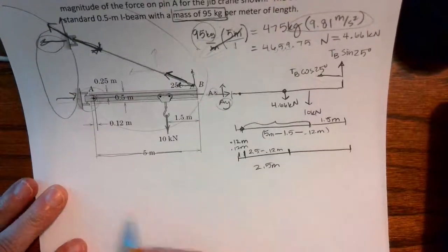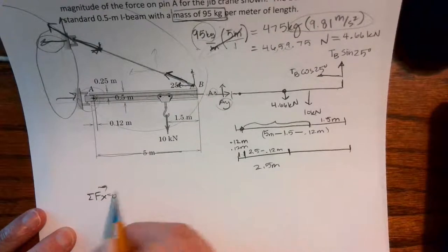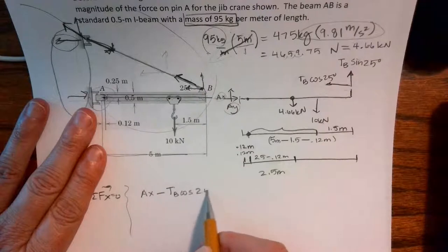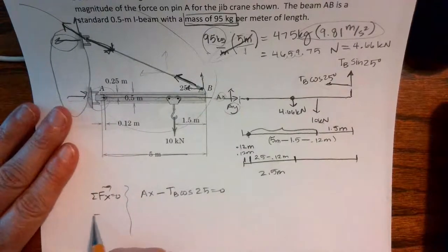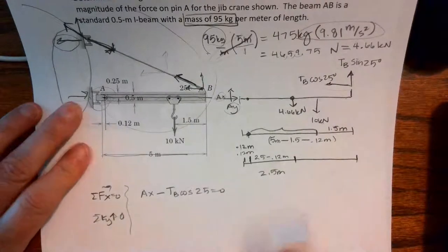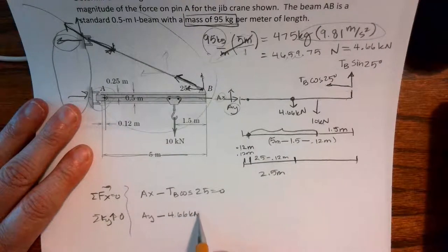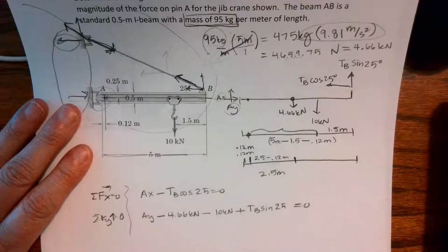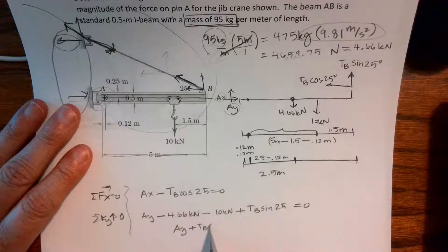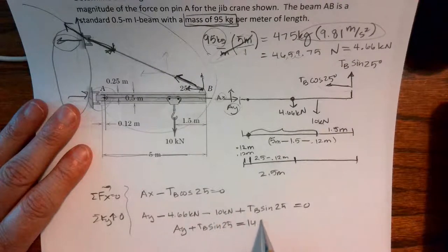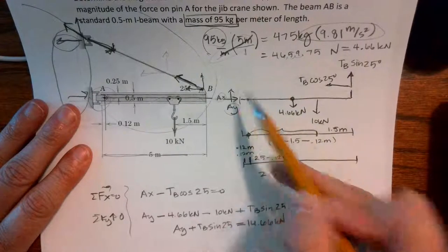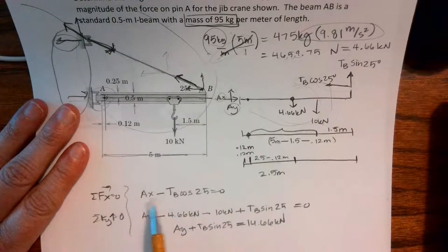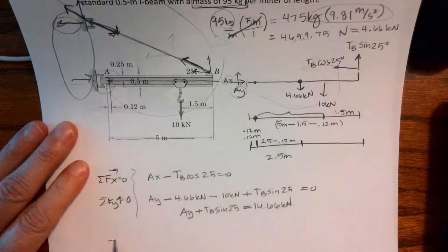We can start - let's just sum forces in the x direction equal zero. I have Ax minus TB cosine 25, all of this equals zero. I can sum forces y: Ay minus 4.66 kilonewtons minus 10 kilonewtons plus TB sine 25, all of this equals zero. So Ay plus TB sine 25 equals 14.66 kilonewtons. Between the cable pulling up and the reaction at the wall, this beam is not going anywhere. But I have Ax, Ay, and a tension, so three unknowns and only two equations, so now I need to take moments.